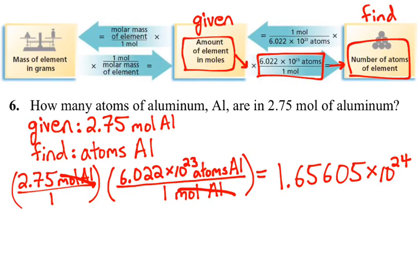So we take a look at the numbers that we started with. We have 2.75 moles of aluminum. That has three significant figures. And Avogadro's number we have rounded here. You can see here in the numerator, 6.022 times 10 to the 23rd atoms. That has four significant figures.